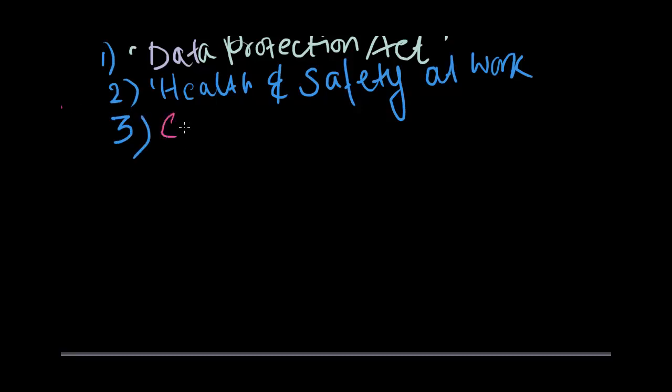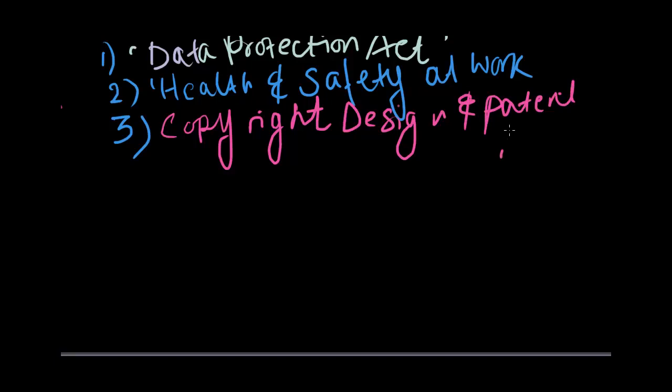The third act that we need to know about is the Copyright Design and Patents Act. This makes it illegal to use software without buying the appropriate license. When a computer system is designed and implemented, licensing must be considered in terms of which software should be used. Is open source the way to go because of the fact that it is cheap or in the long run is proprietary software worth it? Will it offset the cost of the initial purchase by saving money in the long run?